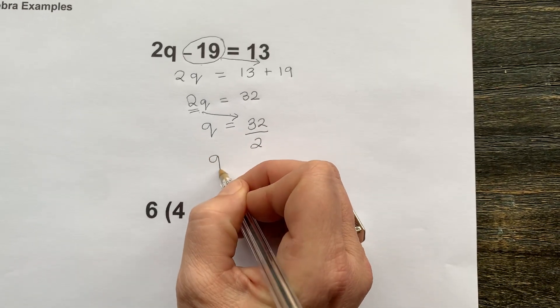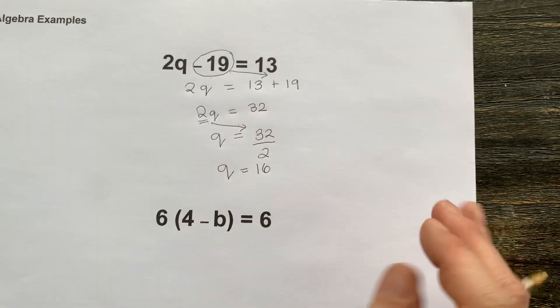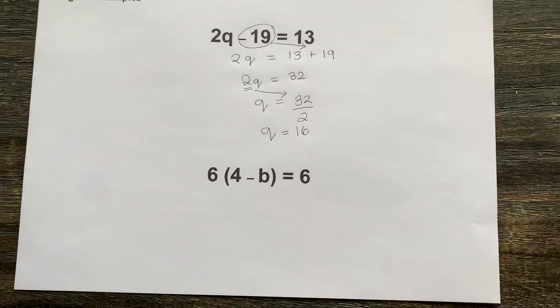So 32 divided by 2 equals 16. Therefore the value of q is 16.